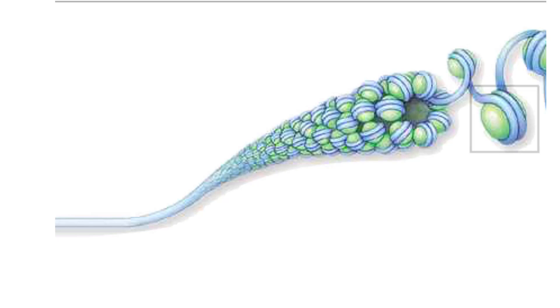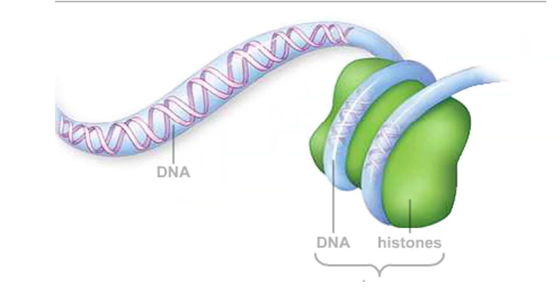If we immerse a chromosome in saltwater, this fiber loosens up to reveal a beads-on-a-string organization. The string is one molecule of DNA. Each bead is a nucleosome that consists of a DNA molecule looped around a core of histones.